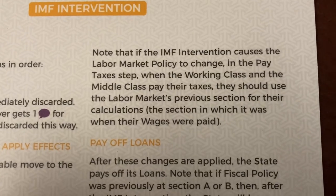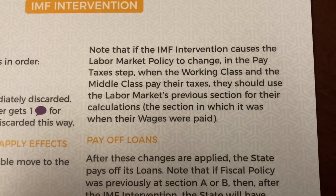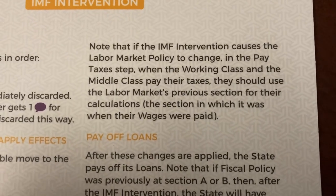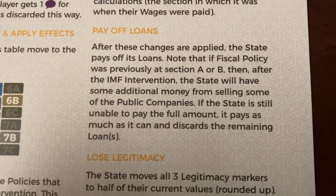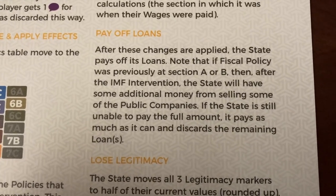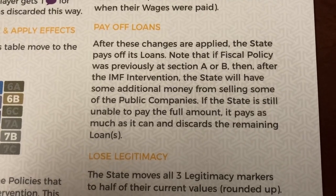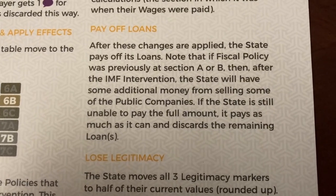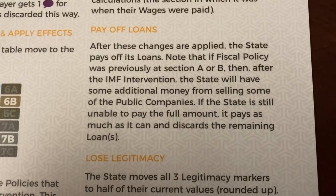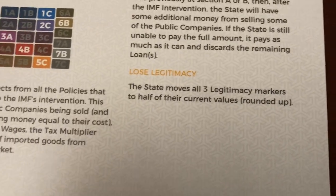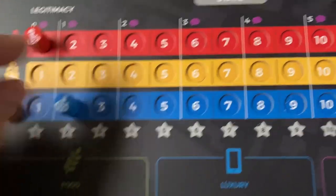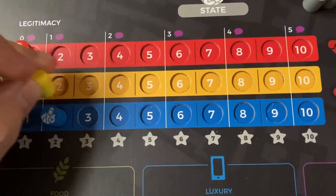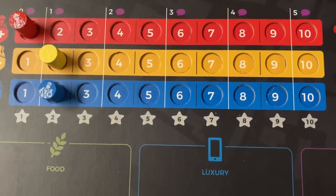For the pay taxes portion, the working class and middle class use the previous section for their taxes — they've already done their work. After these changes are applied, the state must pay off any loans it has the money to cover, then discard any remaining loans. Lastly, the state will move all three legitimacy markers on the board to half of their current total. At that point, the IMF intervention has ended and players can move on.